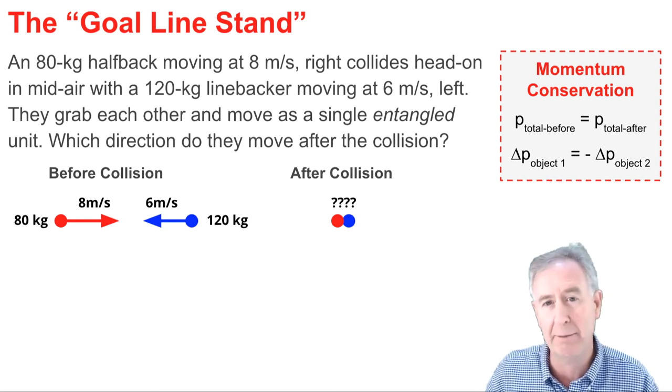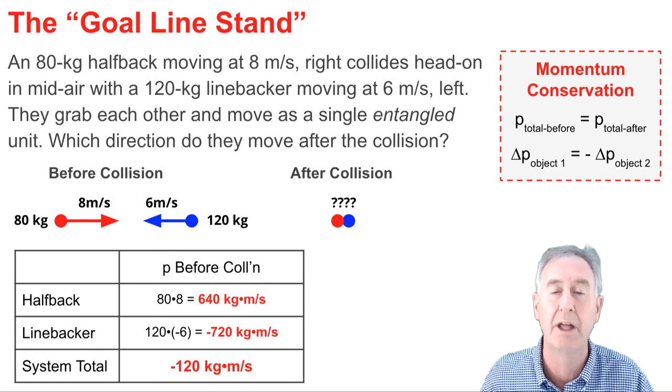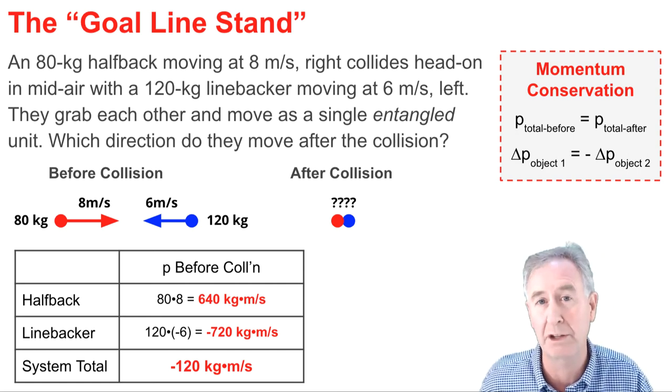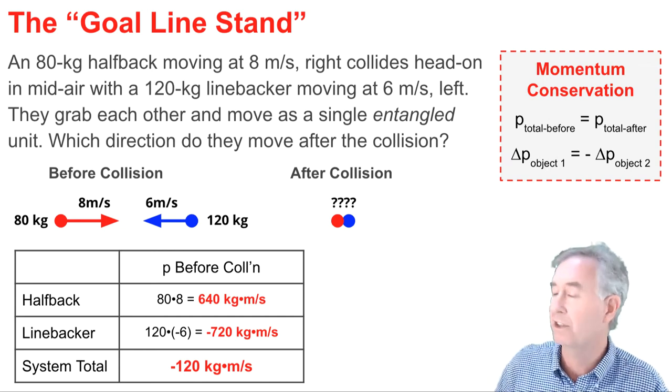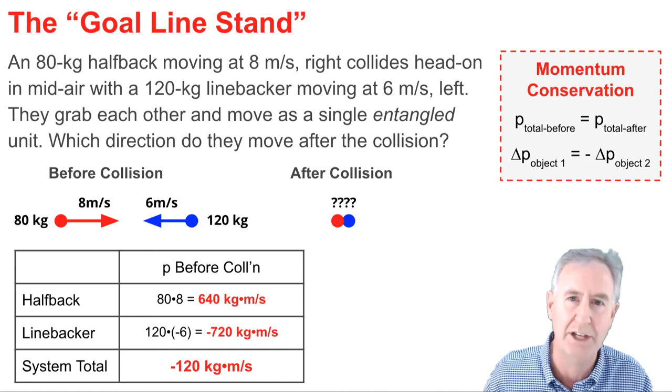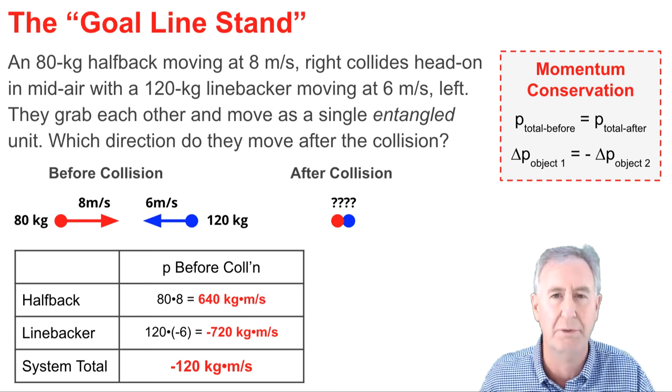You see a diagram here, and here is a momentum table. In the momentum table, I've calculated the momentum of the linebacker and of the halfback and of the system before the collision. What you'll notice is that the momentum of the halfback is 80 times 8, mass times velocity. That's 640 units directed in the positive direction or to the right.